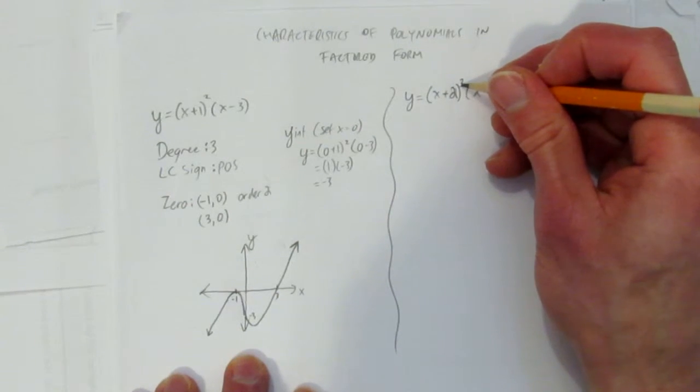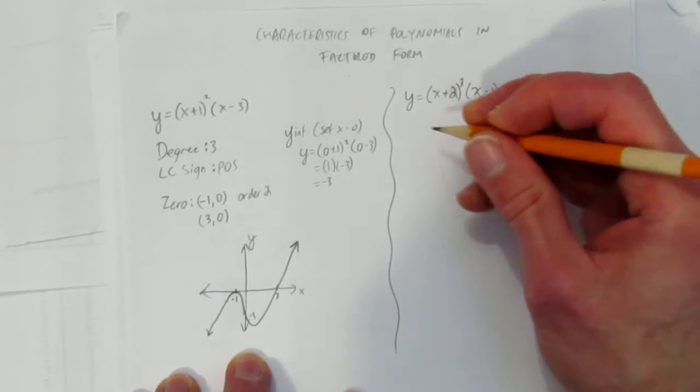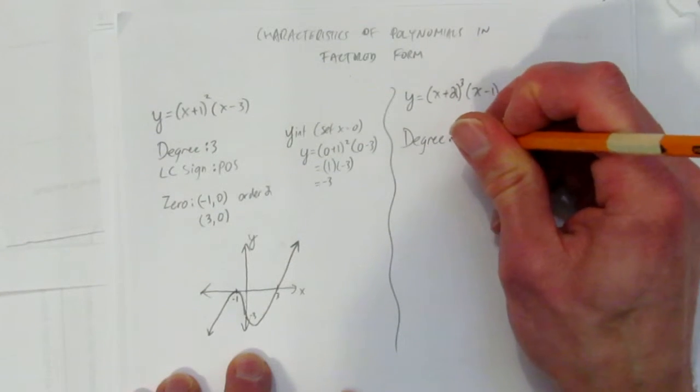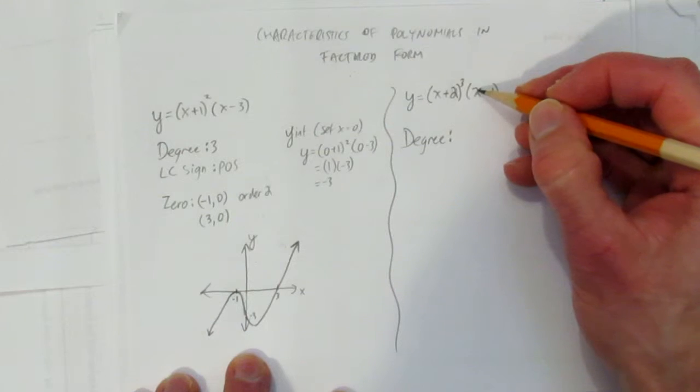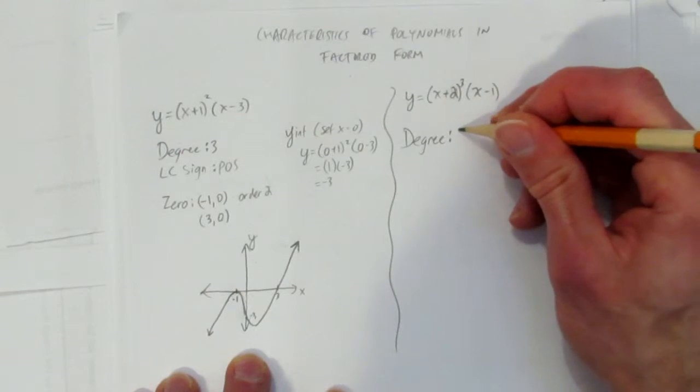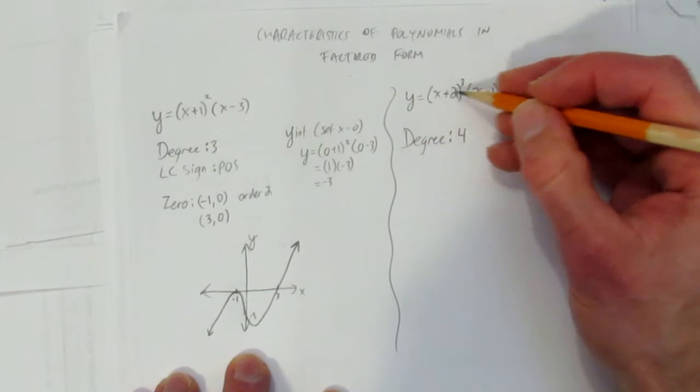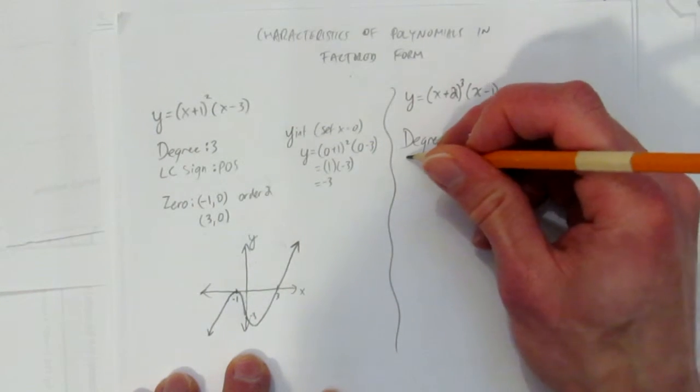Notice this one has a cube on this 0. So the same sort of thinking is going to apply. Let's start again and check the degree. The degree, if you expanded this, you'd get an x cube. But then you times it by x. In other words, this is degree 4. There'd be a total, the biggest exponent you'd end up when you rainbowed or expanded this would be x to the power of 4. So the degree is 4.